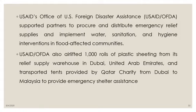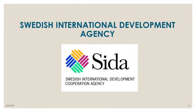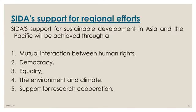USAID and OFDA also airlifted around a thousand rolls of plastic sheeting from its relief supply warehouse in Dubai and transported tents provided by Qatar Charity to Malaysia to provide emergency shelter assistance. SIDA — the Swedish International Development Agency — supports regional and international efforts including mutual interaction between human rights, democracy, equality, the environment and climate, and support for research cooperation.